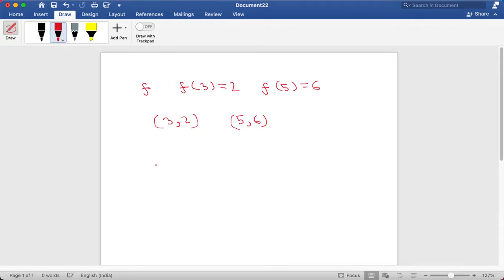So now using this, the gradient formula is y2 minus y1 divided by x2 minus x1. So this will be equal to, so 6 is y2 as it's the second y value, it will be 6 minus 2 divided by 5 minus 3. So this will be equal to 4 by 2, which is equal to 2.